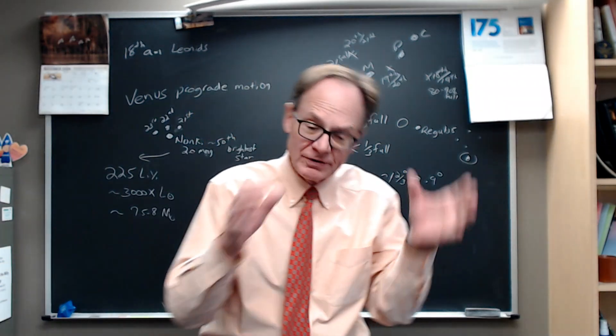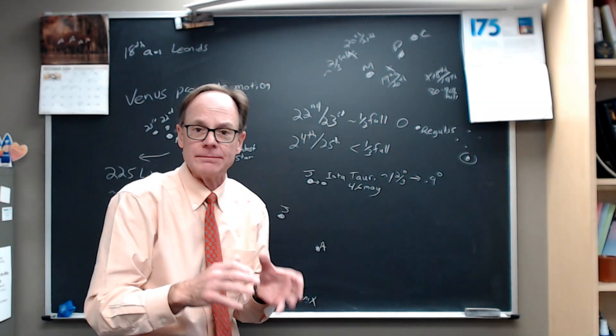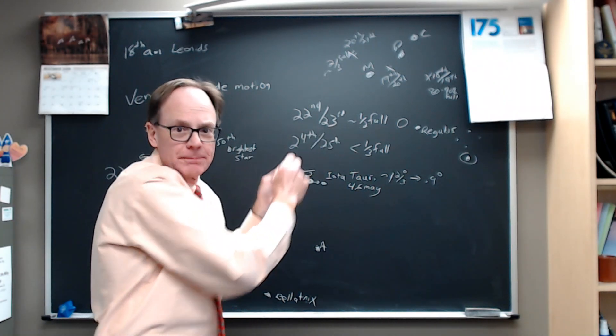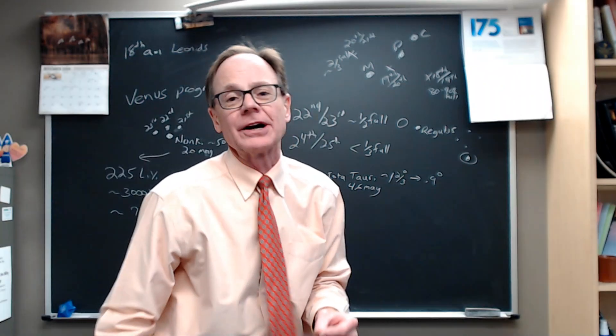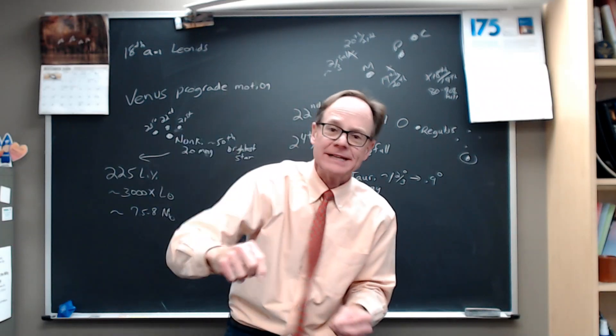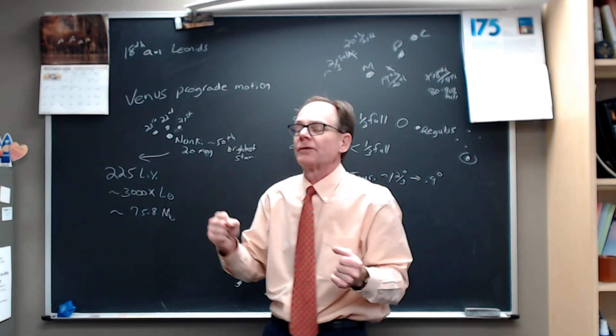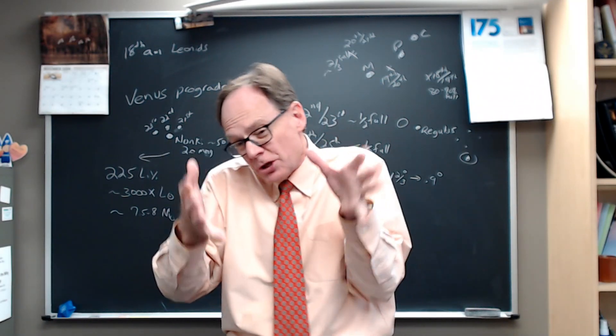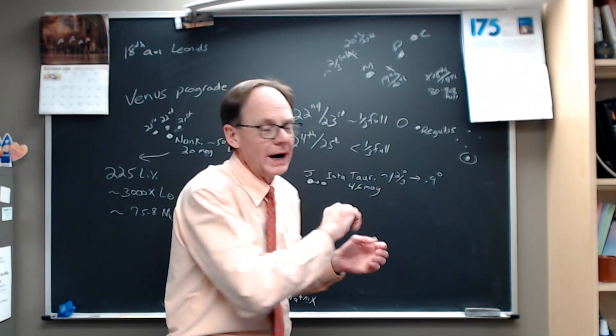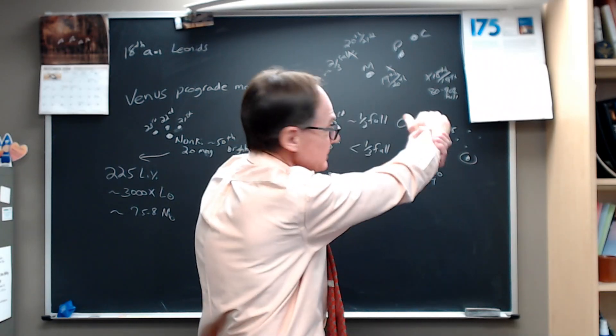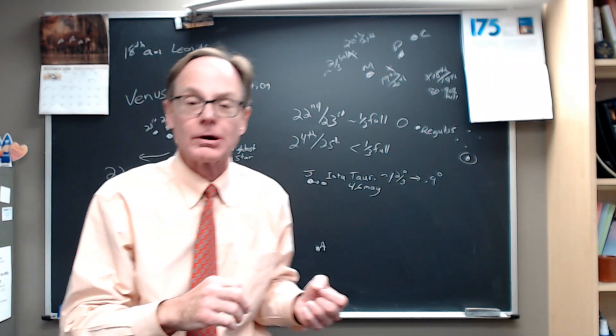In the evening sky, we've got Venus. Last week, we talked about Mars in prograde motion, moving easterly against the background stars, headed toward the Beehive Cluster in Cancer. Keep watching Mars tracking toward the Beehive Cluster. Jupiter and Saturn have been in retrograde motion this entire fall, moving to the west against the background stars. Venus is also in prograde motion.